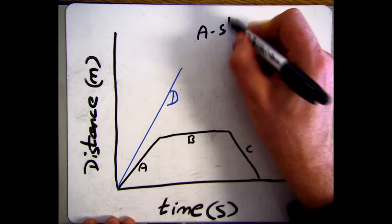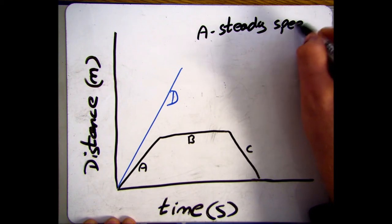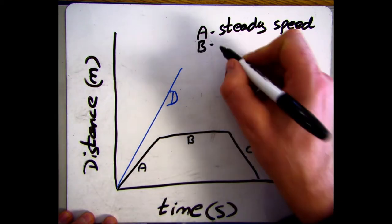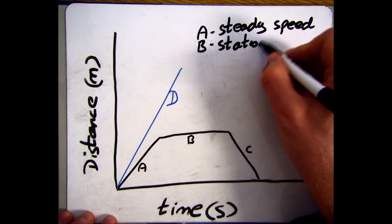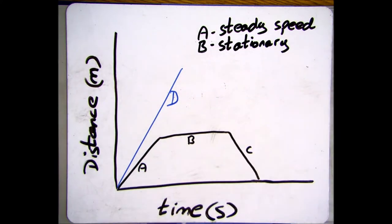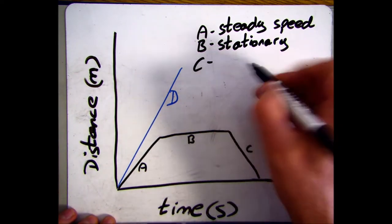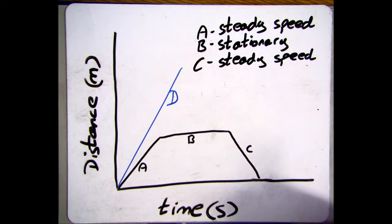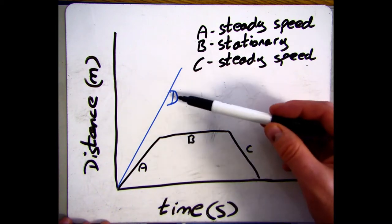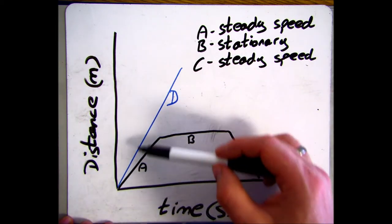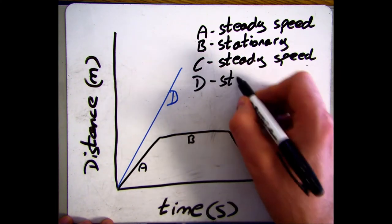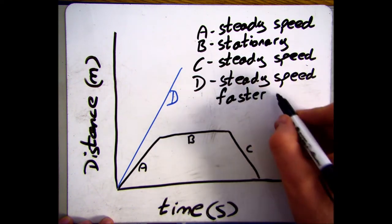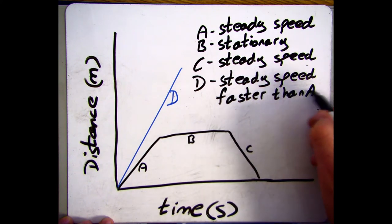At A, the object is moving at a constant speed because the distance changes at a linear rate. At B, the distance doesn't change so the object is stationary — it's staying still. At C, the object is again moving at a steady speed; it's a straight line but moving back to where it started, with distance going back to zero. D is also a steady speed because it's a straight line, but D is slightly faster than A — we can tell because it's steeper and covers more distance in the same amount of time.